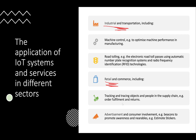The retail and commerce sector includes tracking and tracing objects and people in the supply chain - for example, order fulfillment and returns - as well as advertisement and consumer involvement using beacons to promote awareness. You don't have to stick strictly to the sectors listed on the spec; if you find other sectors and reference them properly, that's perfectly fine.